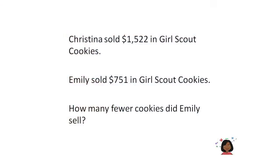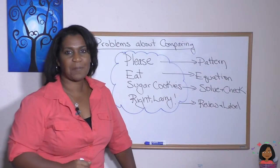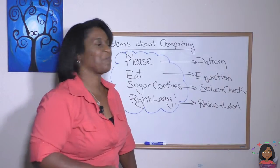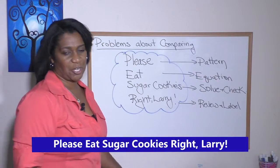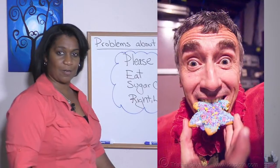Here's our first problem. Christina sold $1,522 in Girl Scout cookies. Emily sold $751 in Girl Scout cookies. How many fewer cookies did Emily sell? Let's go ahead and apply this to our word problem. Please eat sugar cookies right Larry because he's eating them wrong.